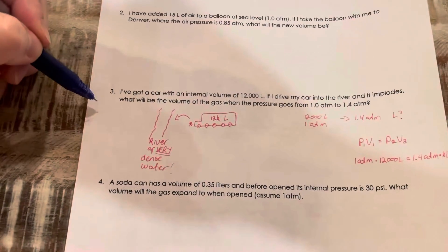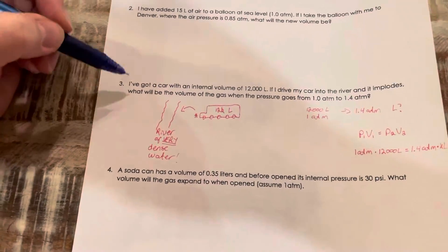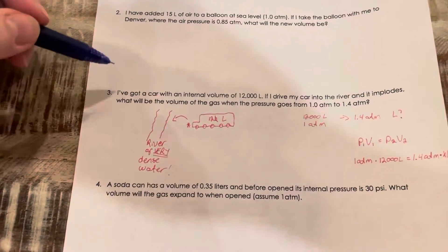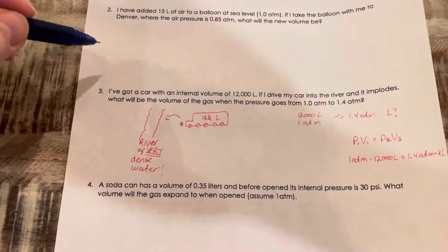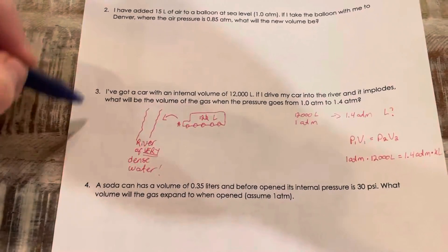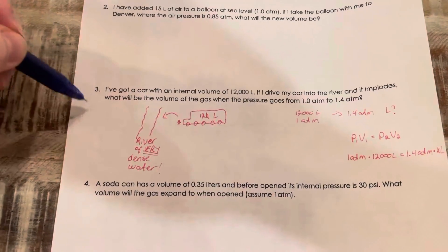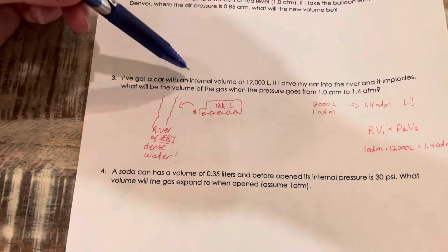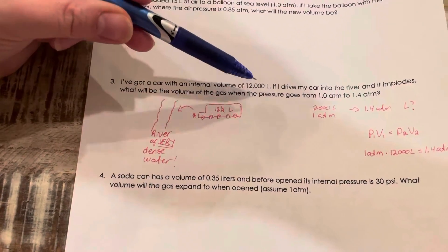So this is an example that I thought was really fun because there's so many logical errors in this way of solving a problem. It tells me that a car has an internal volume of 12,000 liters.